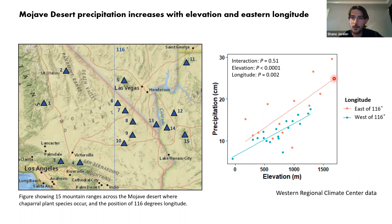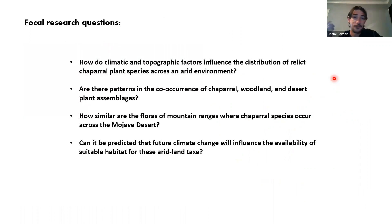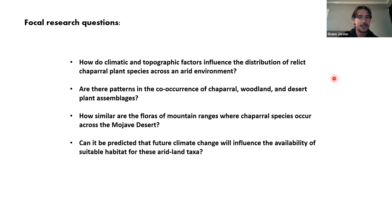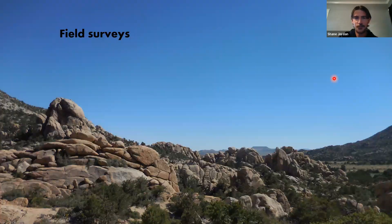This led to four focal research questions: How do climatic and topographic factors influence the distribution of relic chaparral species across an arid environment? Are there patterns in the co-occurrence of chaparral, woodland, and desert plant assemblages in these places? How similar are the floras of mountain ranges where chaparral occurs across the Mojave Desert? And can future climate change be predicted to influence the availability of suitable habitat for these taxa? To answer these questions, the first step was to go out to these mountain ranges and find the plants.